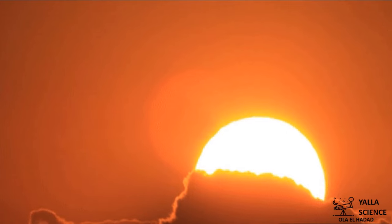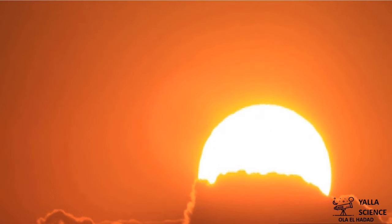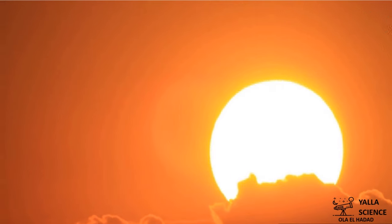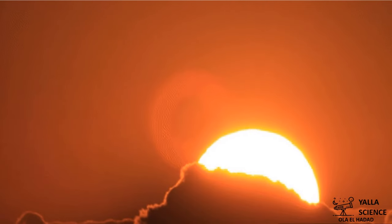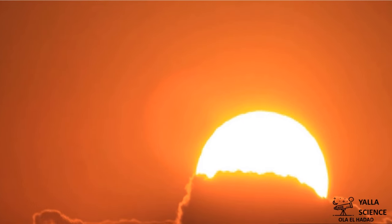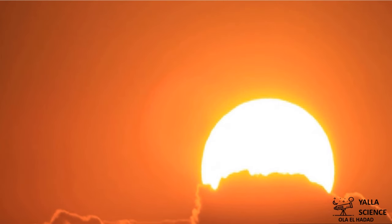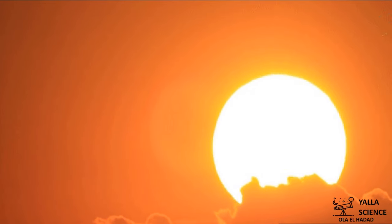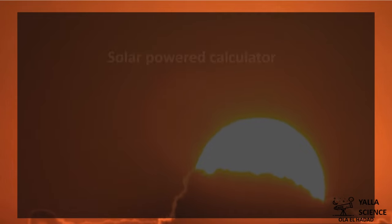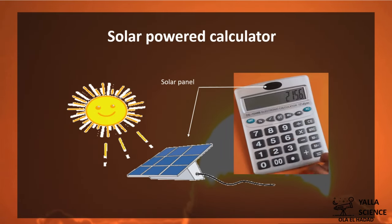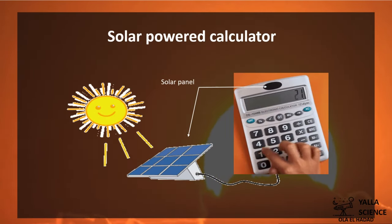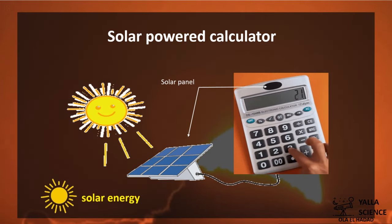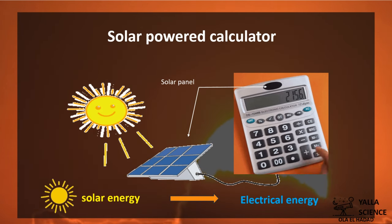The Sun is the source of energy on our planet. Most of the energy we use is made inside the Sun. Different devices can convert the light energy that comes from the Sun into different forms of energy, like a solar-powered calculator. The solar cell inside the calculator changes the energy of sunlight into electrical energy, which is used to operate the calculator.